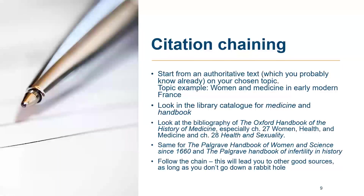Moving on to the first method: citation chaining. You can go down a rabbit hole, as I say. You probably already have something in your bibliography that inspired your chosen topic, but if not, go to the library catalogue and look for a handbook — some kind of authoritative source. A handbook is more like a pedagogical tool that tells you where to find information on specific topics. That's an excellent place to start.